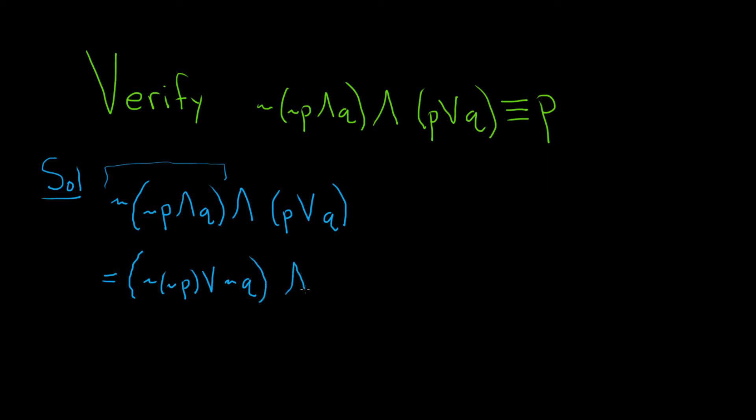So you would end up with not not p or not q. And then here we're left with and p or q. And again, this is by De Morgan's law.